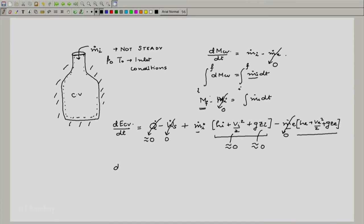So what are we ending up with? We end up with dE_cv/dt equals m dot i h_i. What is h_i? It depends on the inlet state which depends on p naught and t naught. So we can actually find that out because p naught and t naught are known quantities. What about dE_cv?